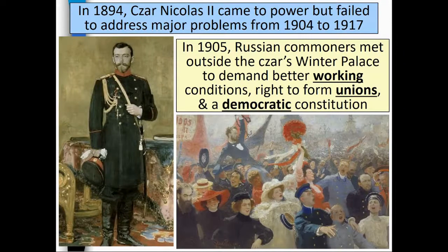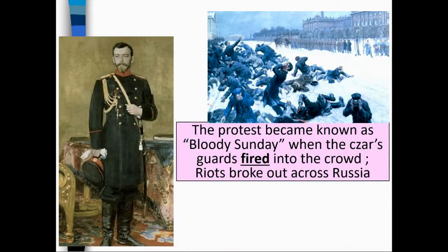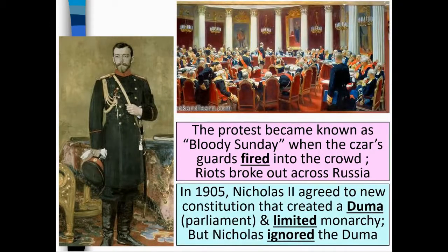In 1905, Russian commoners met outside the Tsar's Winter Palace to demand better working conditions, the right to form unions, and a democratic constitution. The protests became known as Bloody Sunday when the Tsar's guards fired into the crowd, and riots broke out across Russia. In 1905, Nicholas II agreed to a new constitution that created a Duma, or Parliament, and limited monarchy — but Nicholas ignored the Duma.